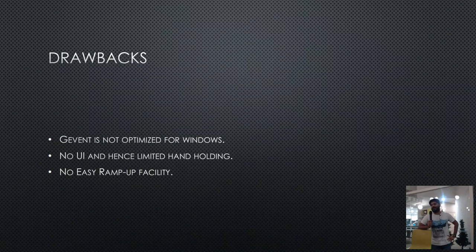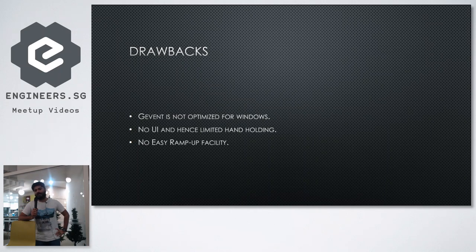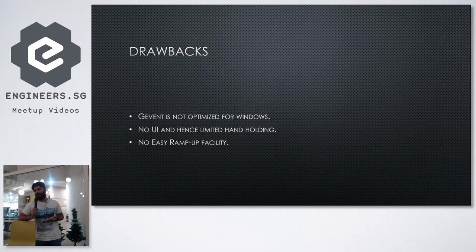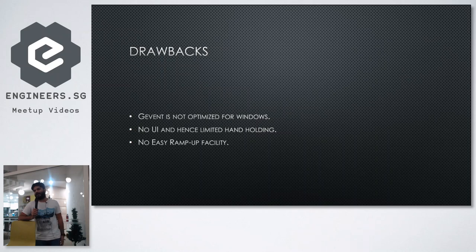Drawbacks: Locust runs on Gevent, which is not really optimized for Windows. If you're running on Windows servers you will hit a strange bottleneck where all your calls start failing after a certain number of users — for me that was around 2700 users. On a Linux-based system it's much more efficient and you can hit much higher loads from a single machine. Also, compared to JMeter where you can click and add elements, this has limited hand-holding — you have to write your own logic.